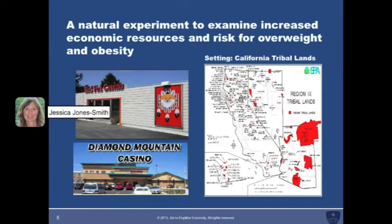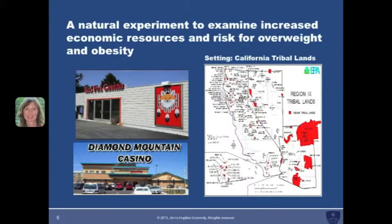This study includes data from roughly 100 tribes in the state of California, approximately 60 percent of which own a casino. As an additional part of this study I'm interviewing tribal leaders and community members to gain a better understanding of the pathways through which economic resources stemming from these casinos might impact health.